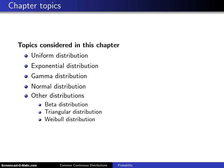But there are a few others that show up in some applications, and we'll cover three of them at the end of the chapter, namely the beta, triangular, and Weibull distributions.